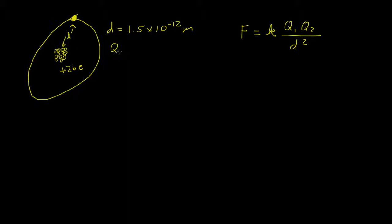So we know that q1, we'll let that be the nucleus, is plus 26e. And q2 will be the charge of the electron, and it's just one electron, so that's going to be just negative e. And it's negative because it's an electron.